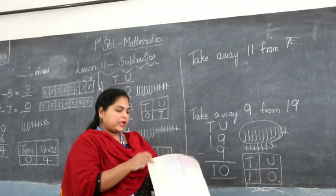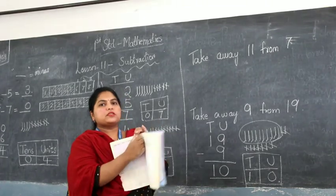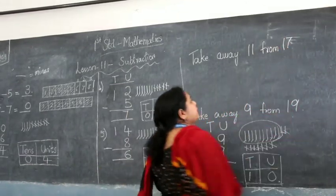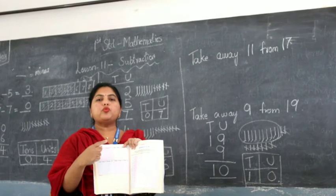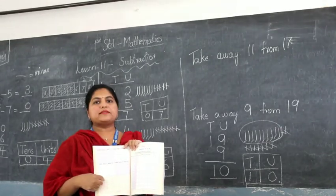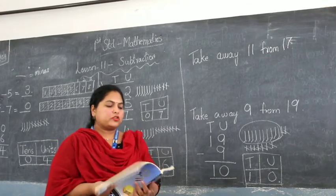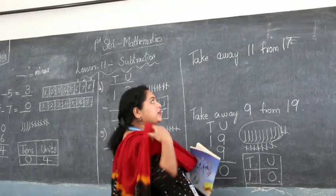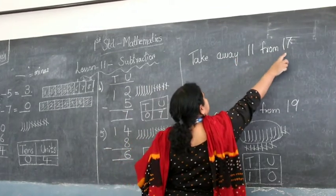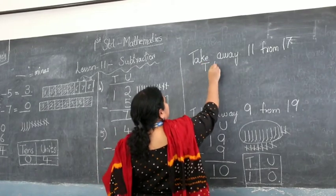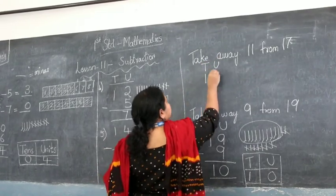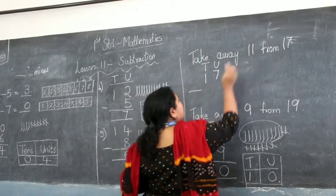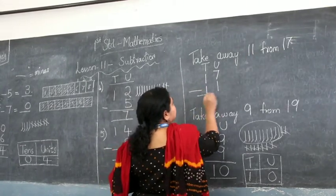I hope you understand how to do this. When you say take away 9 from 19, draw 19 lines, remove 9, what is left you circle, and that goes under your 10s and units column. So 19 minus 9 is 10. Now on the next page you have exercises. Take away 11 from 17 is the question. I will do 1 for you all — I want the remaining sums to be done by you children. So take away 11 from 17: 17 is the big number. 1 ten and 7 units. 17 minus 11 — that is 1 ten and 1 unit.